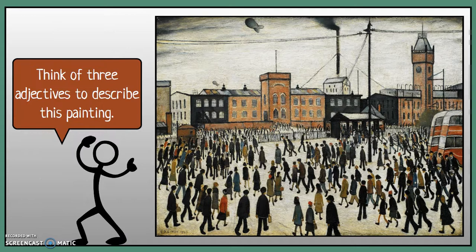Our second question is to think of three adjectives to describe this painting. What are the three things that come to mind when you look at it? You've created your word bank of nouns of things you can identify in the image, and now your question is to think of three adjectives that you could use to describe them.